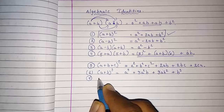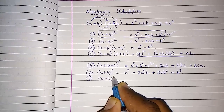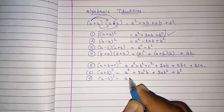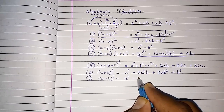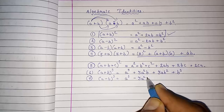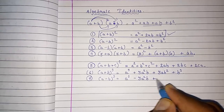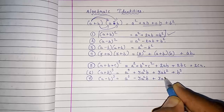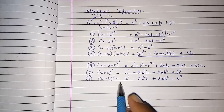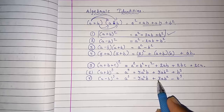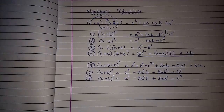Seventh identity: A minus B whole cube gives you A cube — positive — then negative 3A square B, then positive 3AB square, and then negative B cube. So it is positive, negative, positive, negative. It is so simple, you can directly keep it in your mind.